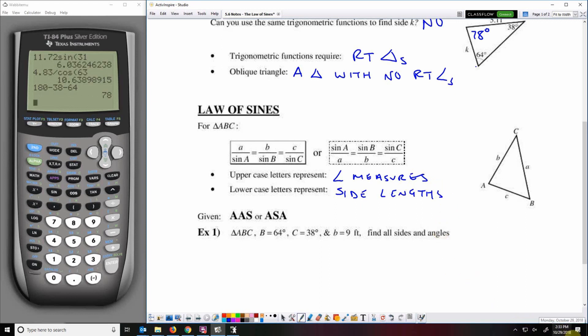And that can be used any time we are given angle angle side or angle side angle which really what that's telling us is that we've got to have two angles and one side. Any time we've got two angles and one side we can use the law of sines.